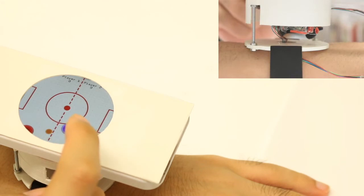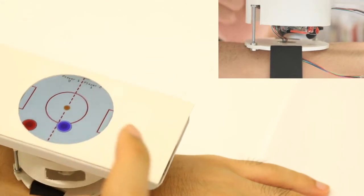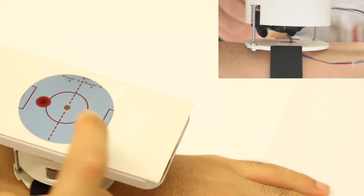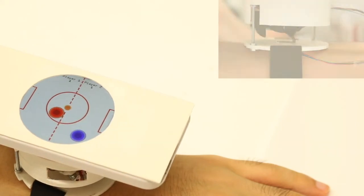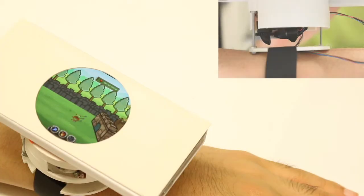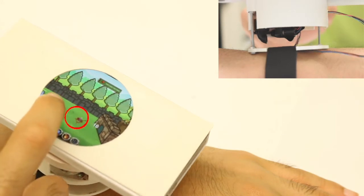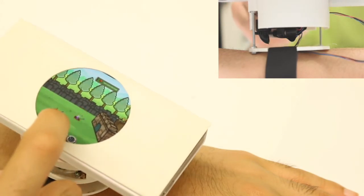In the air hockey game, feedback is rendered to highlight the different impact angles of the puck. In the tower defense game, a smaller object causes lighter feedback, while a heavier object causes larger feedback.